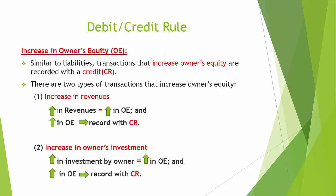Similar to liabilities, transactions that increase owner's equity are recorded with a credit. There are two types of transactions that increase owner's equity: an increase in revenue and an increase in owner's investment. An increase in revenue will result in an increase in owner's equity, and an increase in owner's equity is recorded with a credit. Likewise, an increase in investment by the owner increases owner's equity, and again, an increase in owner's equity is recorded with a credit.